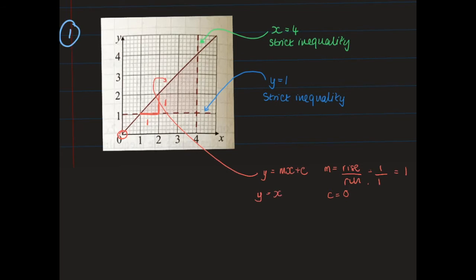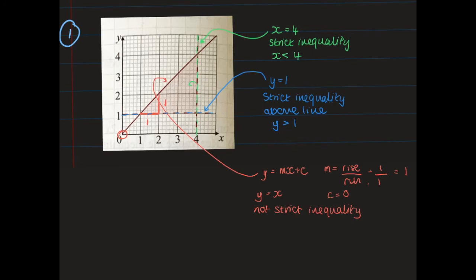The y equals x line is solid, so I know it's not a strict inequality. Now I need to decide what the inequalities are by looking at where the shaded region is. The shaded region is above the y equals 1 line, so that inequality is y is greater than 1. The shaded region is to the left of the x equals 4 line, so all x values are less than 4 — a strict inequality because of the dashed line.